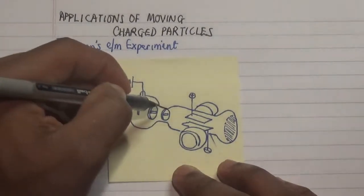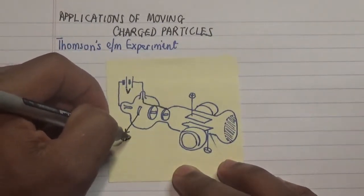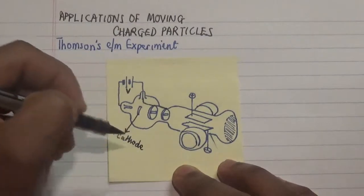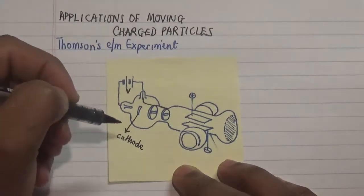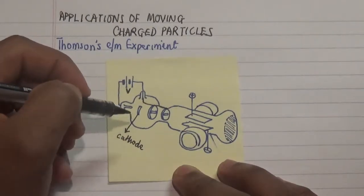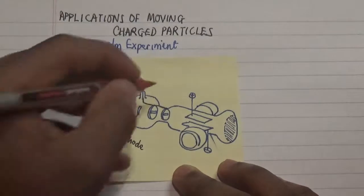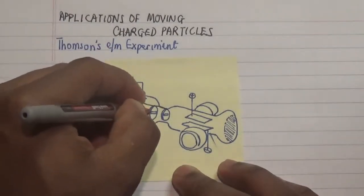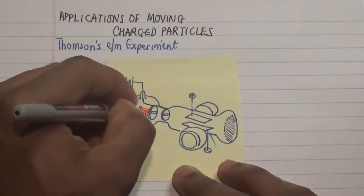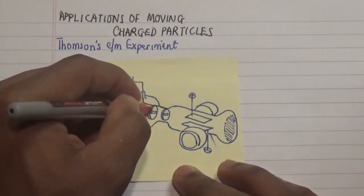Now before talking about the anode let's talk about this particular part here. This is a cathode, and this cathode is very hot. The heat applied to this electrode excites a huge amount of electrons that are targeted towards the anode. So huge amounts of electrons are moved from the cathode over to this first anode.